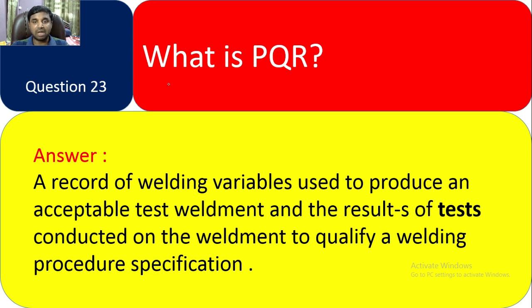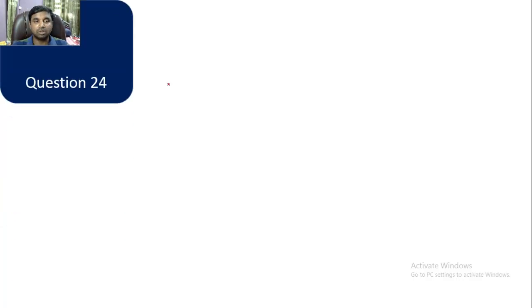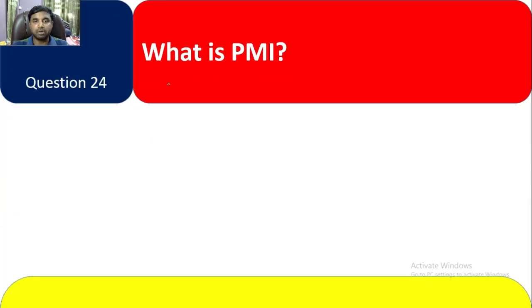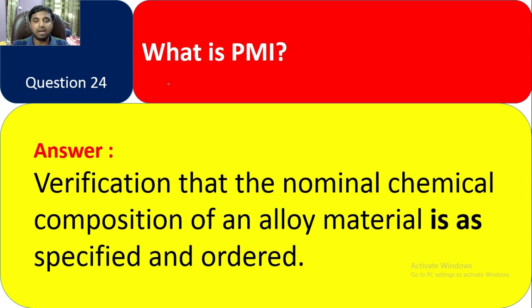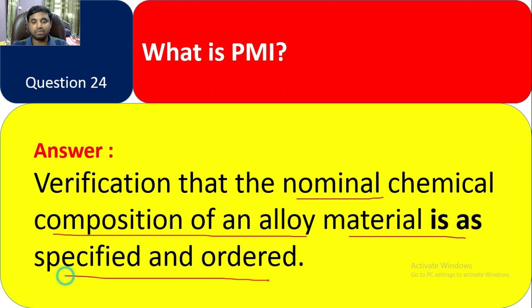Once the PQR test is accepted, the final WPS can be approved. Question 24: What is PMI? Answer: Positive Material Identification — verification that the nominal chemical composition of an alloy material is as specified and ordered. We have to check the nominal chemical composition of the alloy material.